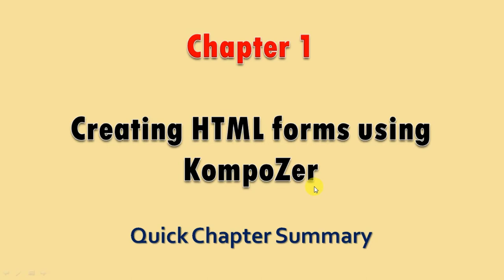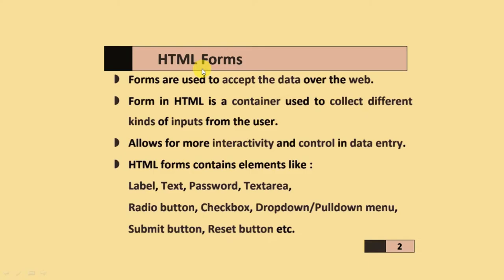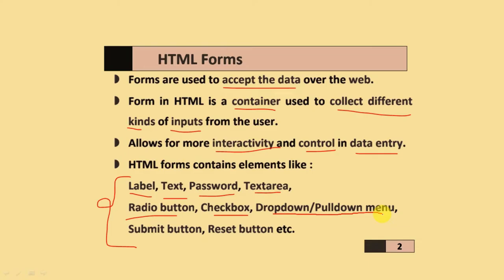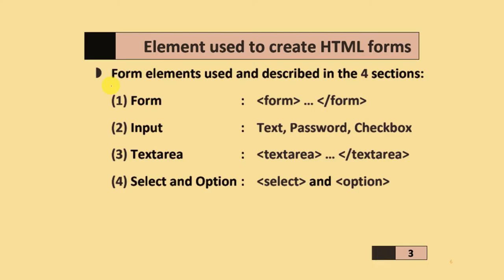Chapter one is creating HTML forms using Composer. HTML forms are used to accept data over the web. A form in HTML is a container used to collect different kinds of inputs from the user. It allows more interactivity and control in data entry. An HTML form contains elements like labels, text, passwords, text areas, radio buttons, checkboxes, drop-down menus, submit, and reset buttons.